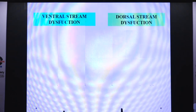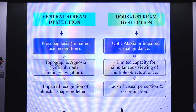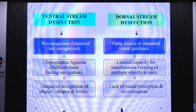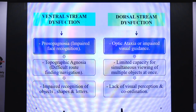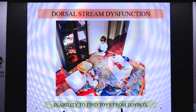When this system goes awry, CVI happens. In ventral stream dysfunction, we notice prosopagnosia or impaired face recognition, topographic agnosia or difficulty in route finding and navigation, and impaired recognition of objects, shapes, and letters. Dorsal stream dysfunction is more related to visual mapping, causing optic ataxia or impaired visual guidance, limited capacity for simultaneous viewing of multiple objects, and lack of visual perception and coordination.